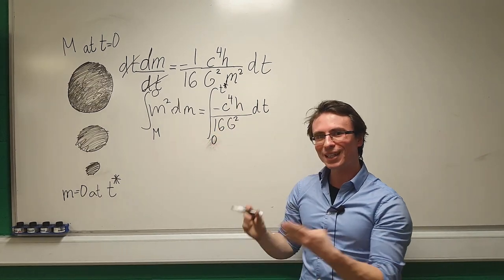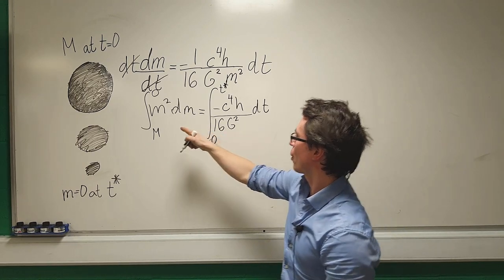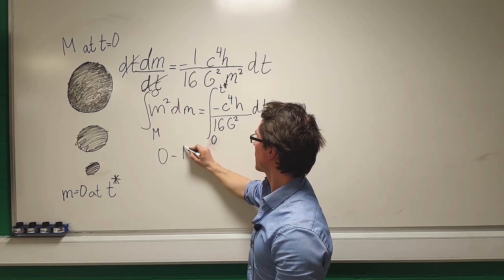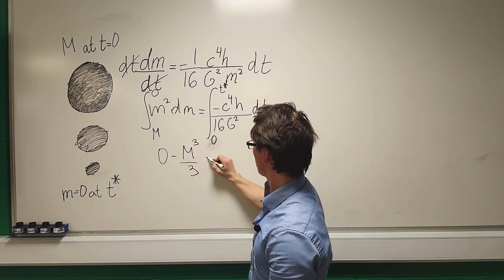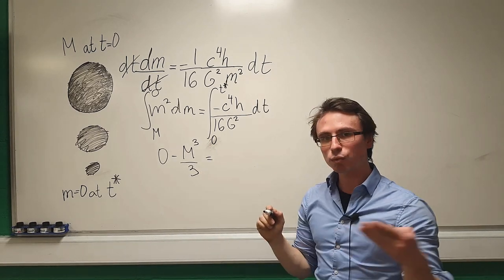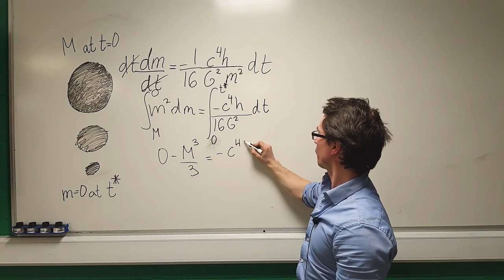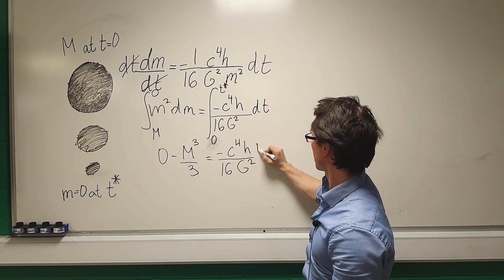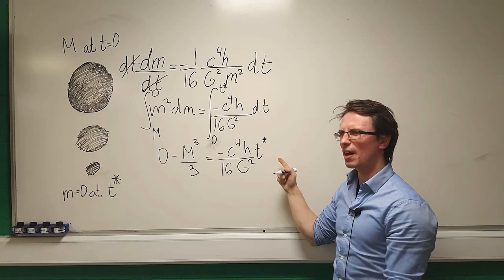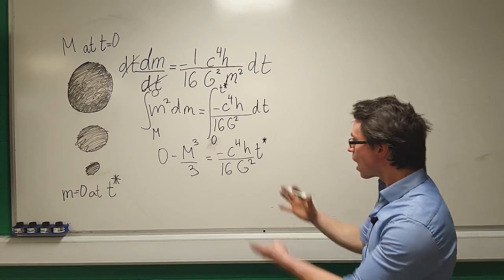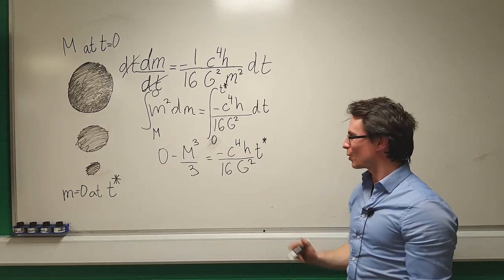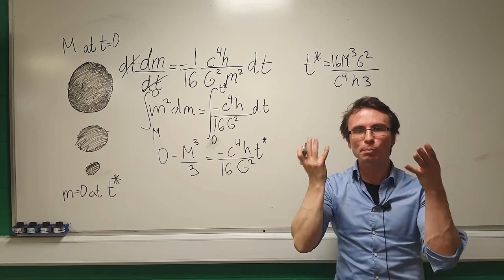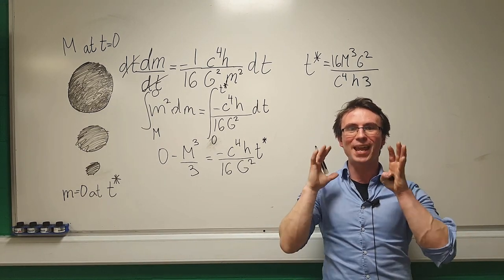Okay now luckily for us these things are relatively straightforward to integrate. m squared dm with a boundary is zero and this will be equal to zero minus m cubed over three and this will then be equal to minus c⁴h over 16 g squared and then we have a factor of t star. Now we almost have an expression, all we need to do is just rearrange this expression for t star and there we have it, we have an expression for the evaporation time of a black hole.